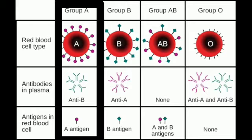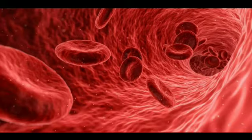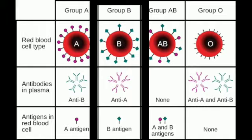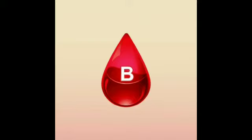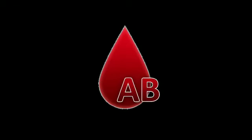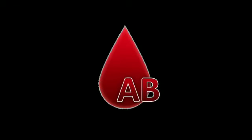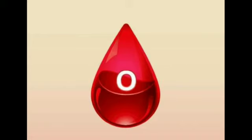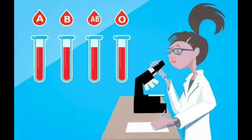If an individual has A antigen on their red blood cell surface, then they are A blood group. If they have B antigen, it is B. If they have both the antigens, then they are AB. And if they have none, then they are called O blood group.